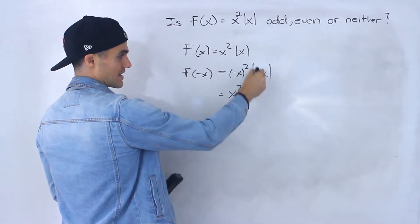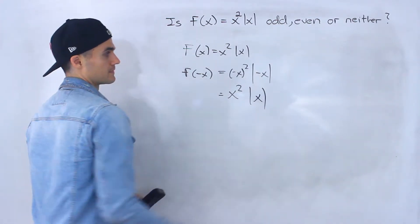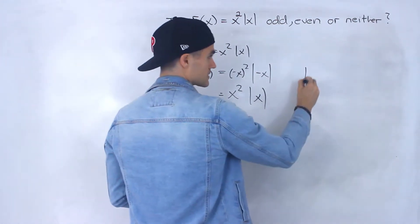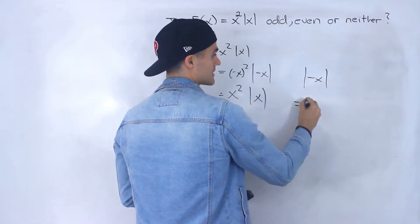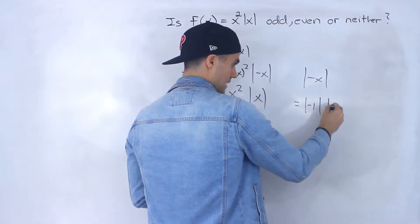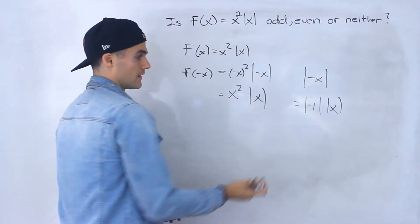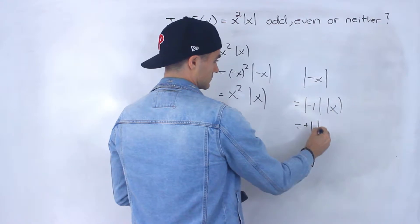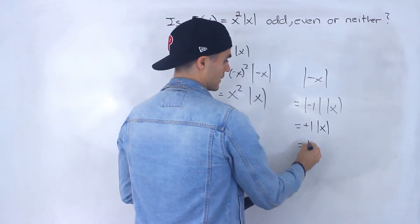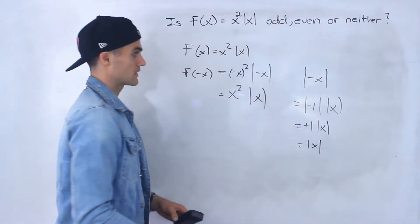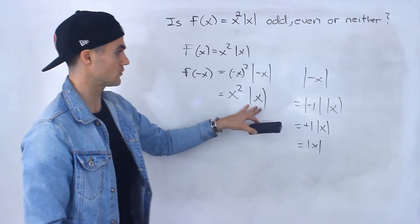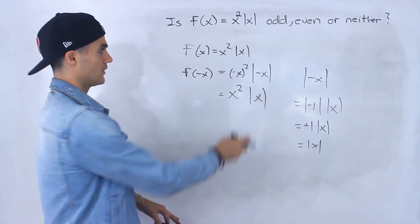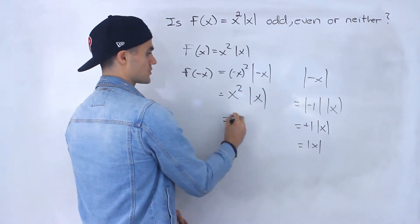Negative x to the power of any even exponent is just going to end up being x to the even exponent. And then as we showed in the previous example, this is just equal to that, right? Because we can rewrite this as absolute value negative one times absolute value of x. Absolute value negative one is just positive one. And then we end up with absolute value x. So this is equal to that.